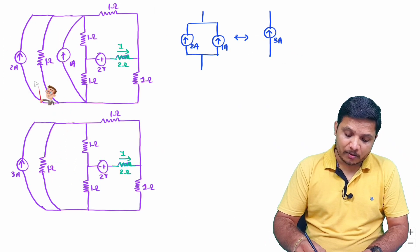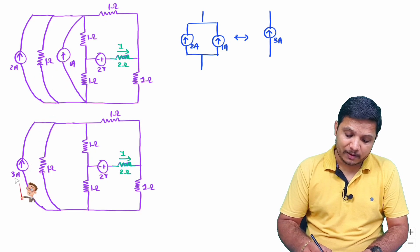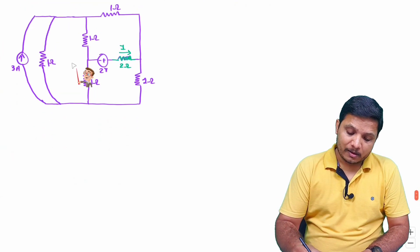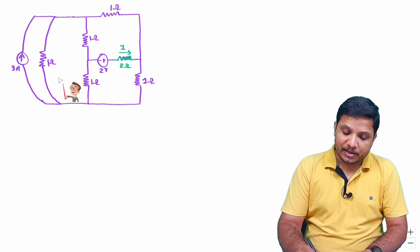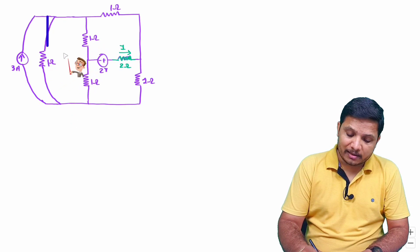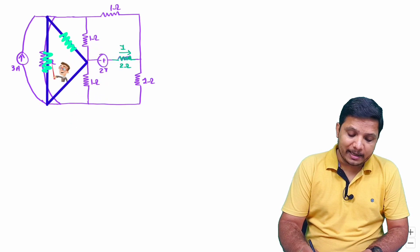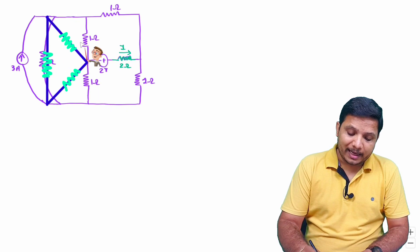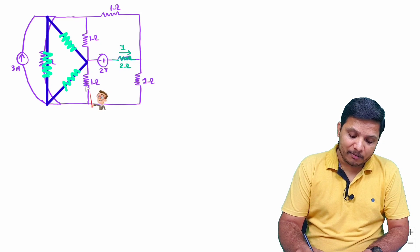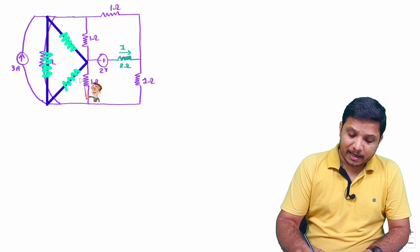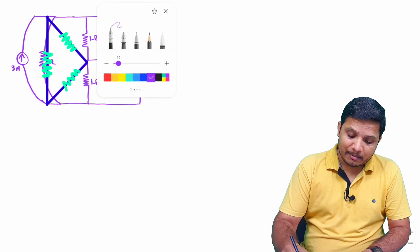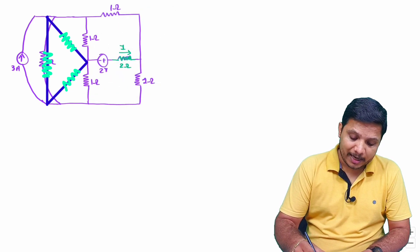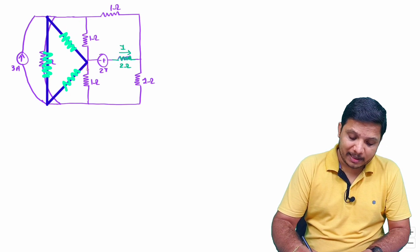I need to replace these two current sources with a single 3-ampere current source. Now for further simplification, I can see three resistors connected in delta form. If I convert that into star form, further simplification will be much easier. So I will convert this delta connection into star form.